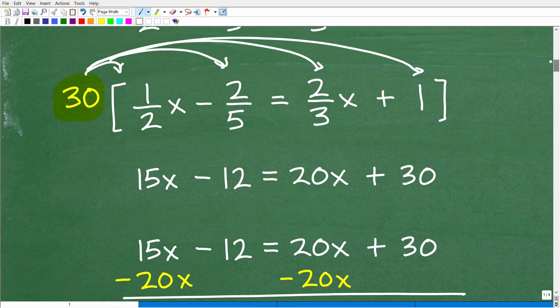And the results of doing that, let me go ahead and walk this down. So 30 times 1/2 x gives us 15x. You've got to, of course, know how to multiply fractions. 30 times 2/5 is 12. 5 goes into 30, 6 times 2 is 12.